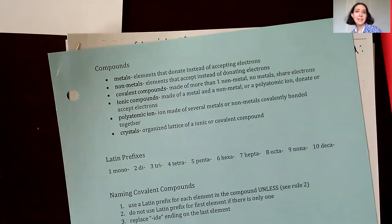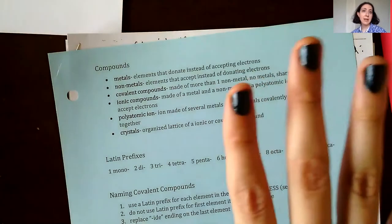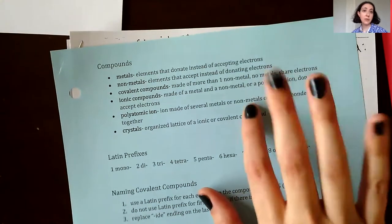After that you're going to find the exact same types of materials for all of the rest of the units. So for example, this is the notes for unit two.